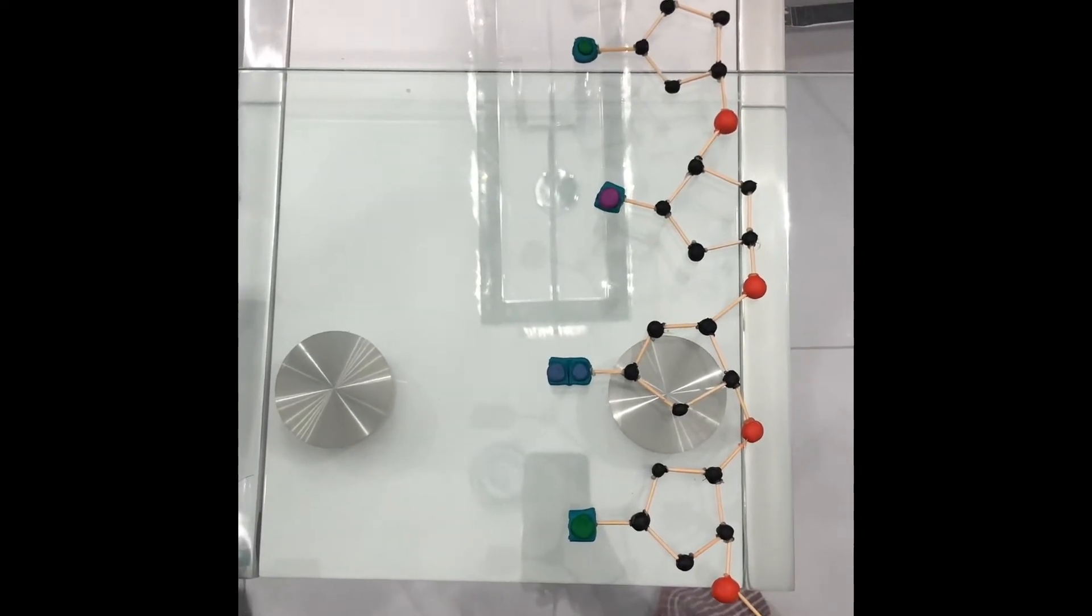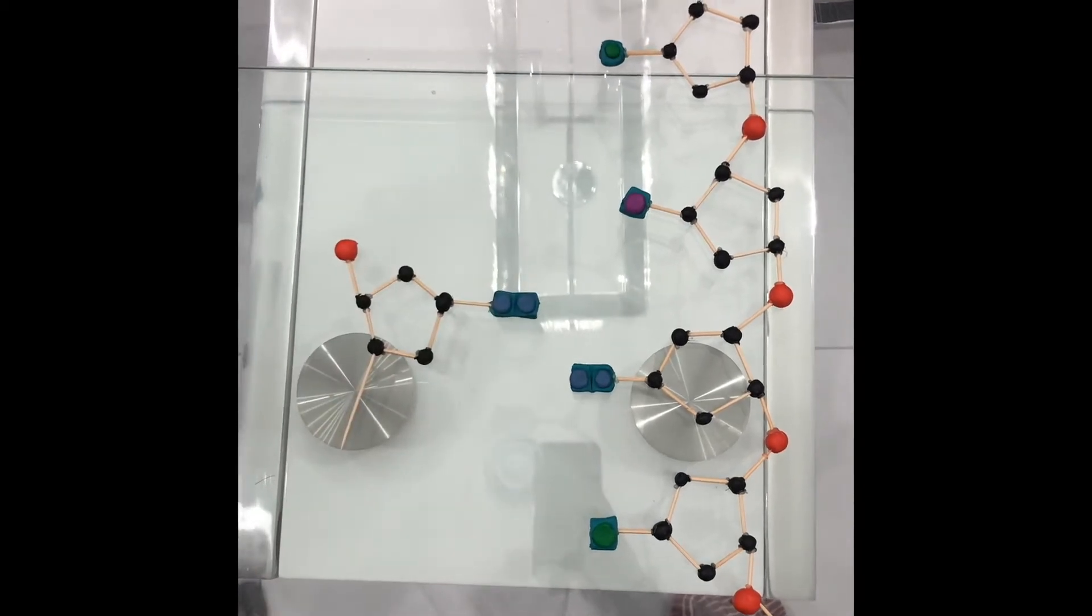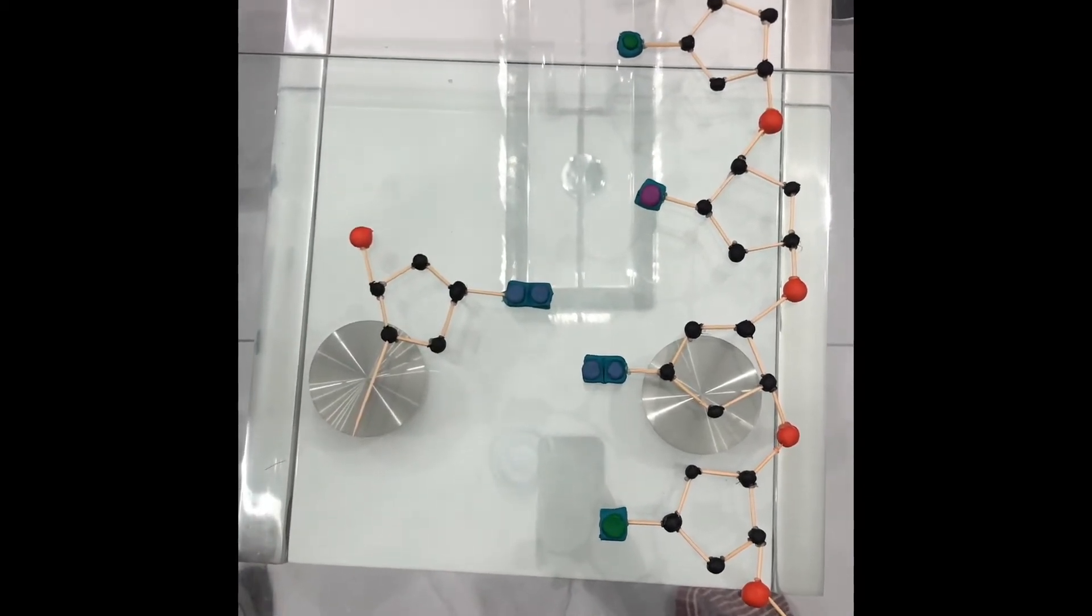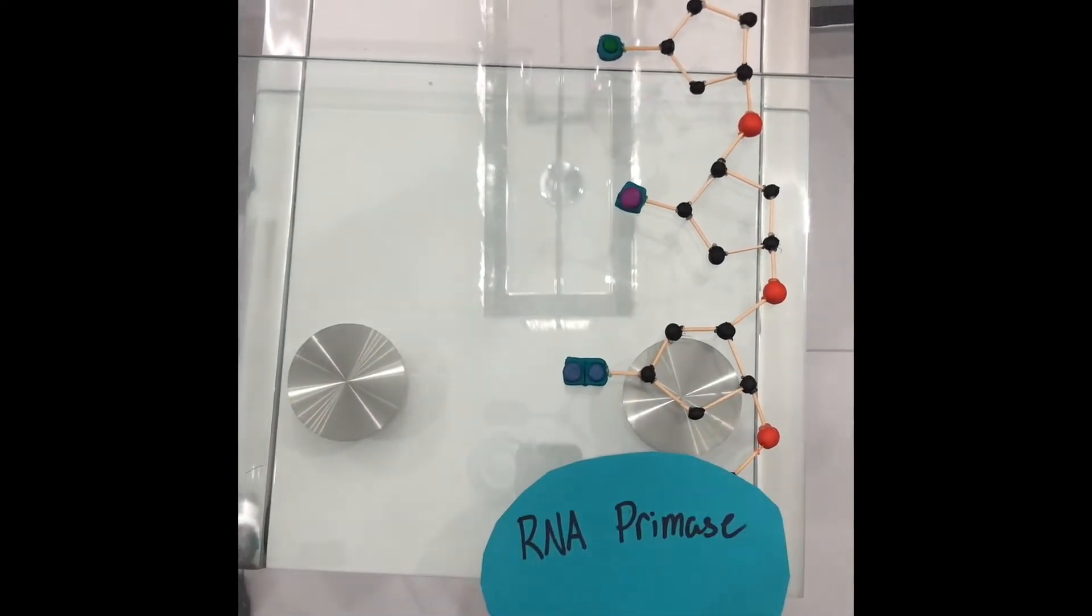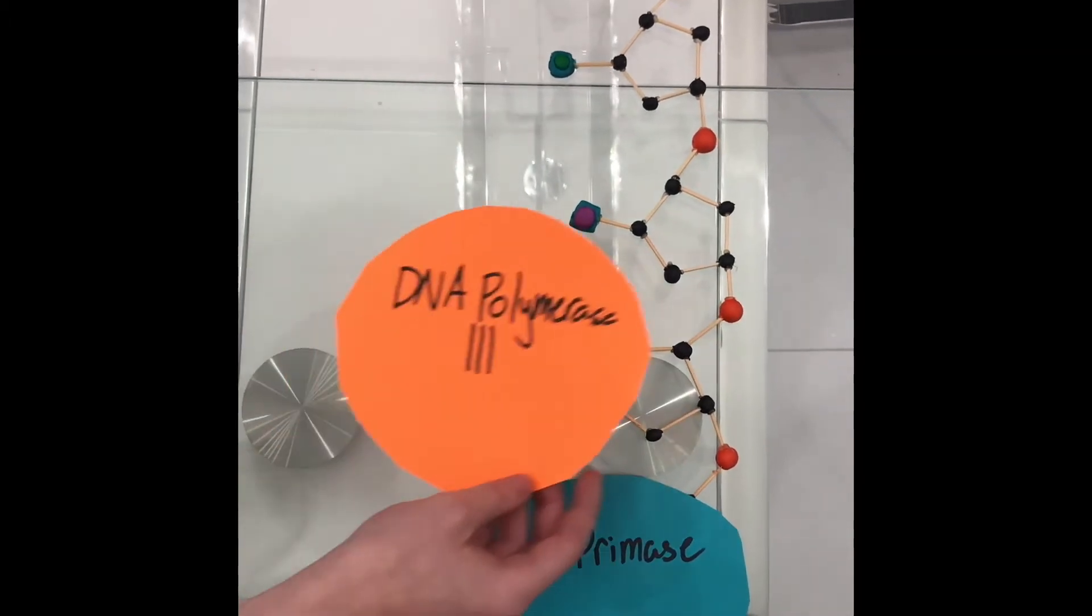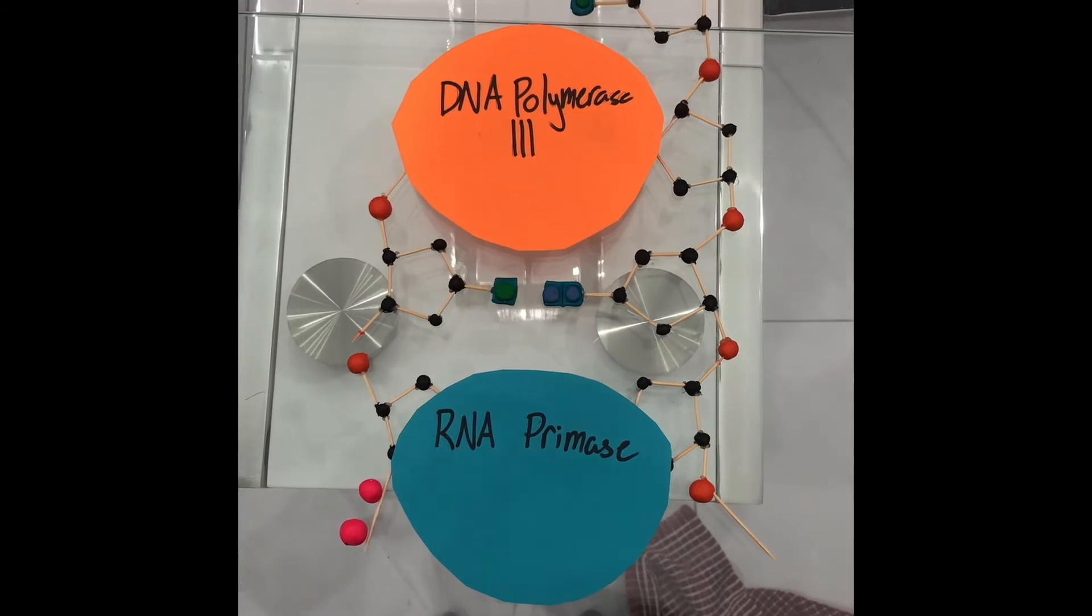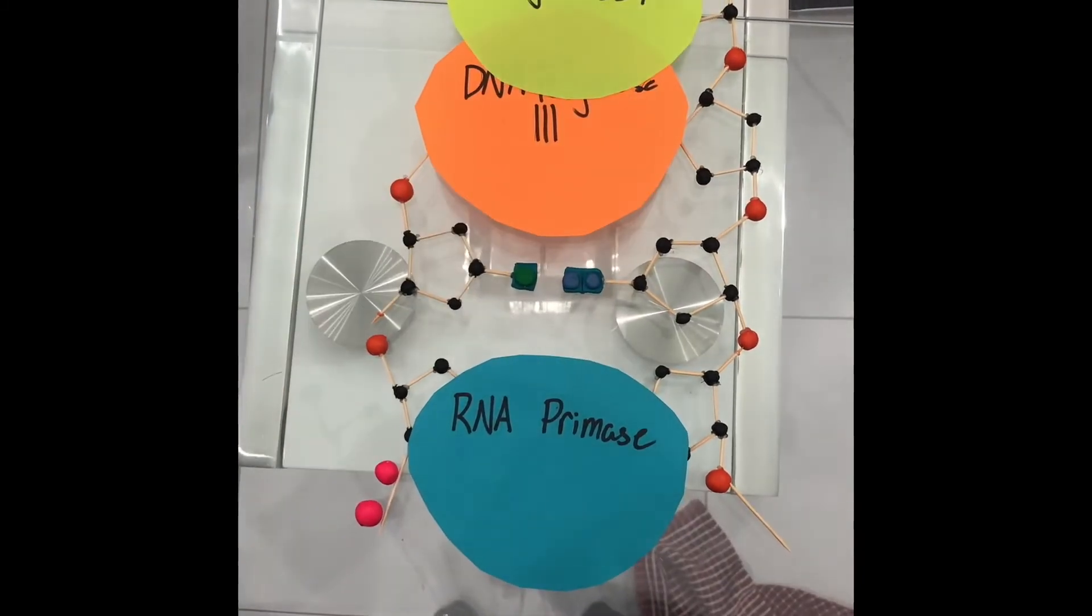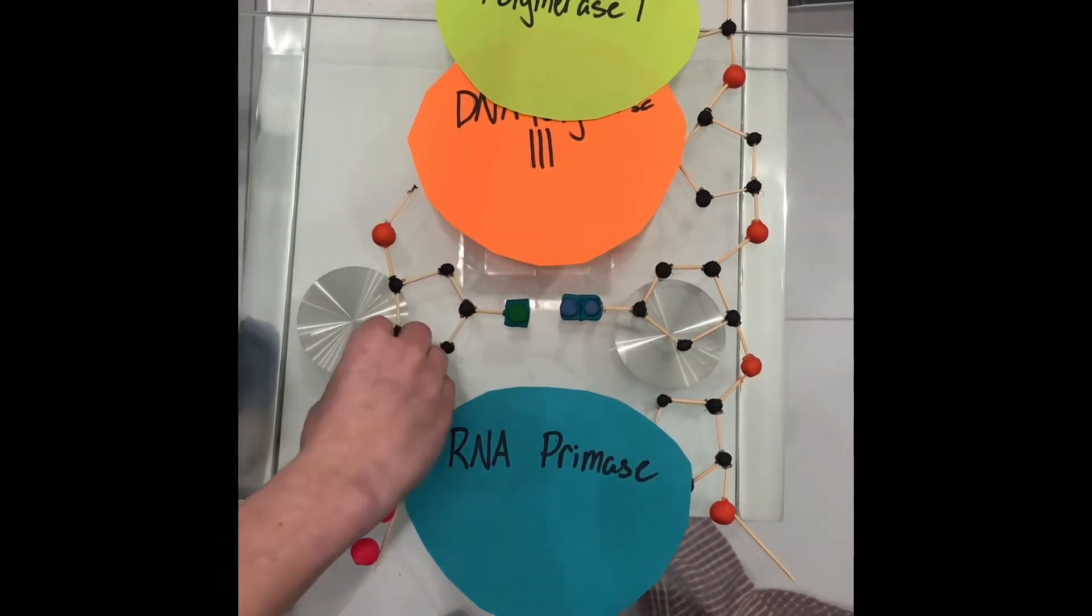Now let's do the lagging strand. The lagging strand is assembled by Okazaki fragments, which are made up of primer, primase, and DNA polymerase 3. The lagging strand uses discontinuous synthesis. The primer adds the RNA primase to the front of the 5 end. The DNA polymerase 3 adds nucleotides. The DNA polymerase 1 replaces the primer, and finally the DNA ligase attaches the Okazaki fragments to the lagging strand.